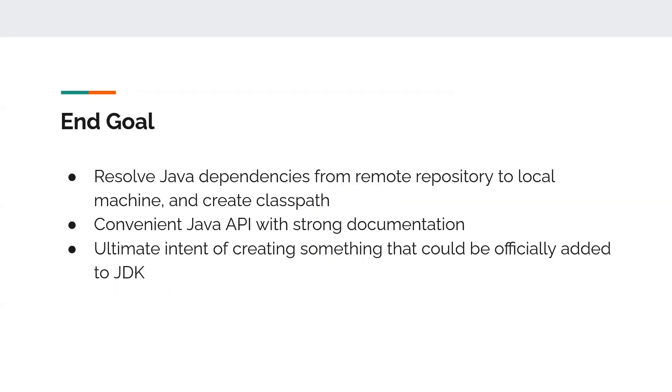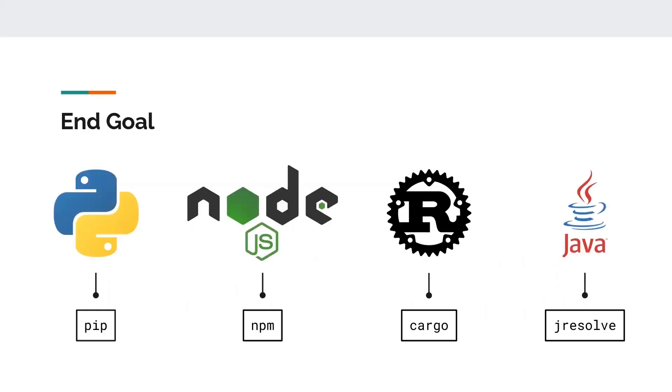So, the ultimate goal of this project is to create something that could be officially added to the JDK as a dependency resolution solution. Such that the dependency resolution solution will be alongside pip, npm, and cargo as the definitive way you resolve dependencies for the Java language, and you don't have to go looking for any other tool separate from Java.